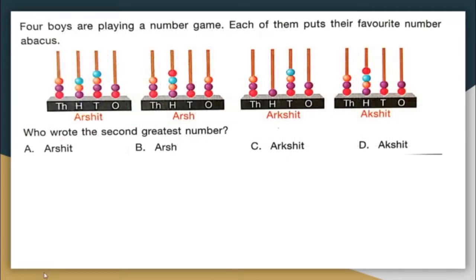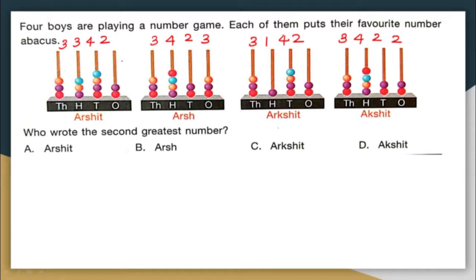Next question. Four boys are playing a number game. Each of them puts their favorite number on their backs. Arshith wrote 3,342; Arsh wrote 3,423; another wrote 3,142; and Akshit wrote 3,422. The question is: who wrote the second greatest number? The biggest number is 3,423 written by Arsh. The second biggest is 3,422 written by Akshit. So the correct answer is option D — Akshit wrote the second greatest number.